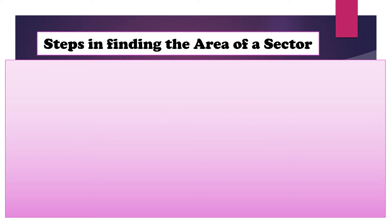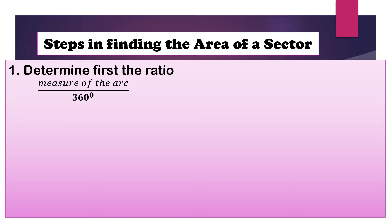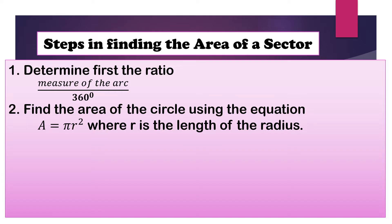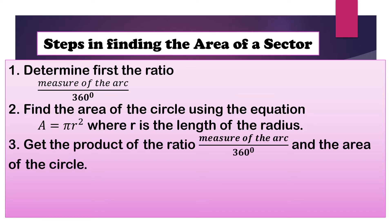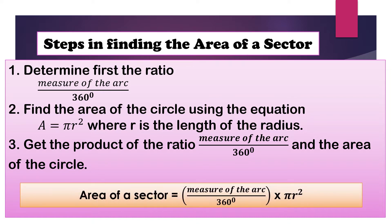Let us have now the steps in finding the area of a sector. Step 1: determine first the ratio, which is the measure of the arc over 360 degrees. Step 2: find the area of the circle using the equation A equals pi r squared, where r is the length of the radius. Step 3: get the product of the ratio from step 1 and the area of the circle from step 2.